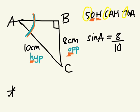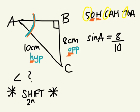Okay, whenever you need to find an angle, whenever you need to find an unknown angle, we always use what button? Shift or second, whatever it says on your calculator. So first, what do we have to do here?